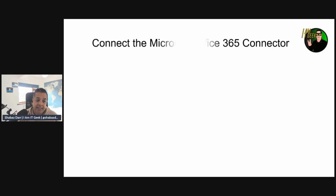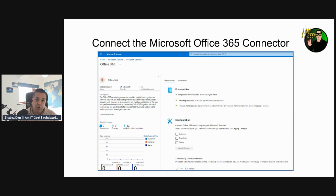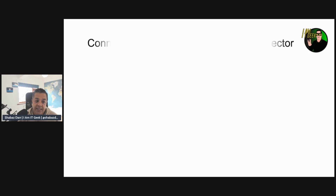Talking about connecting Microsoft Office 365 connectors: the activity log connector provides insight into ongoing user activities. You'll get details of operations such as file downloads, access requests that are sent, changes to group events, the Set-Mailbox command, and details of the user who performed all these actions.